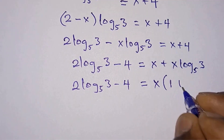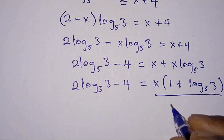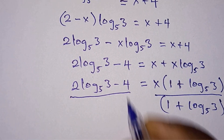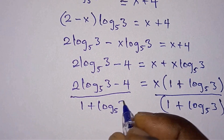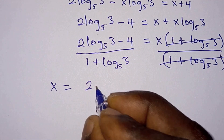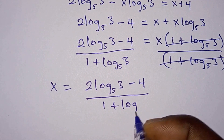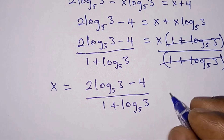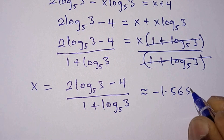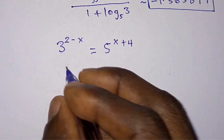x is common on the right hand side so we take x out and we have x times 1 plus log base 5 of 3. Since we are looking for x, we divide each side by 1 plus log base 5 of 3, so that cancels, and now we have x is equal to 2 log base 5 of 3 minus 4, all divided by 1 plus log base 5 of 3. From here we can use the calculator to get x, which is approximately negative 1.565897. This is the value of x from the first method.